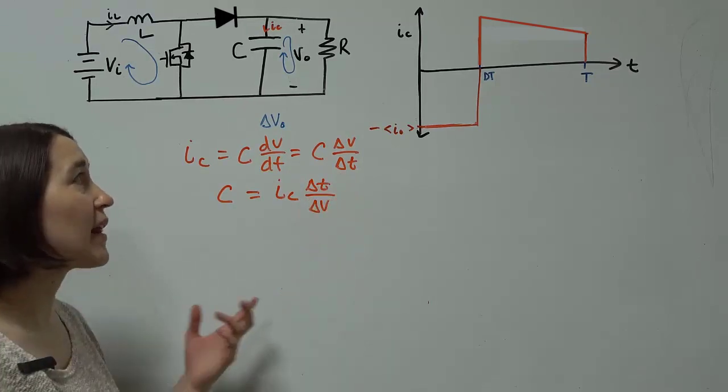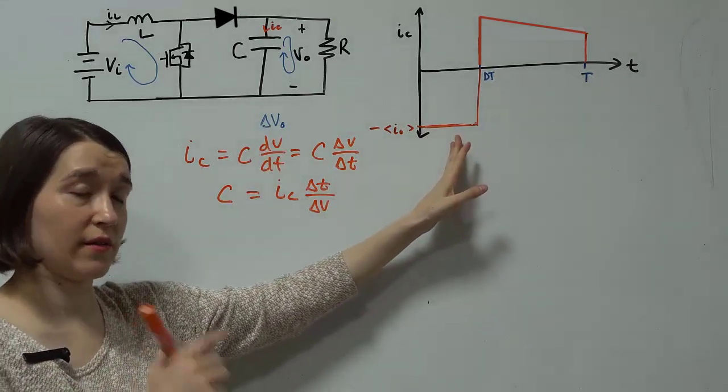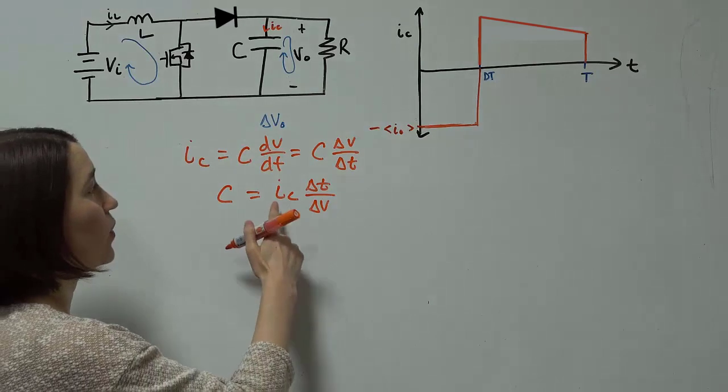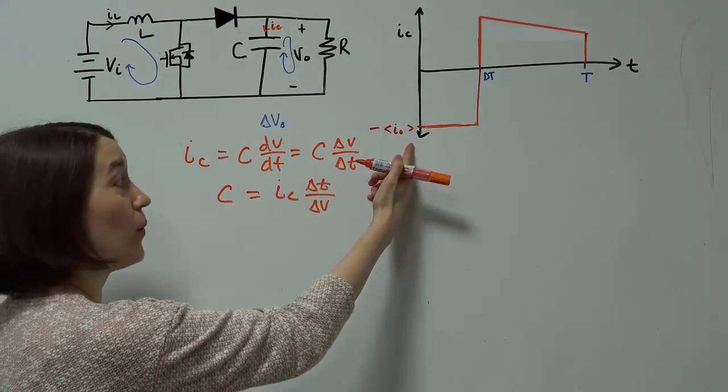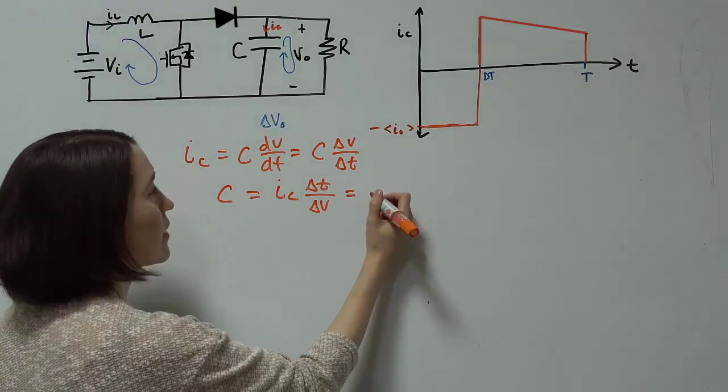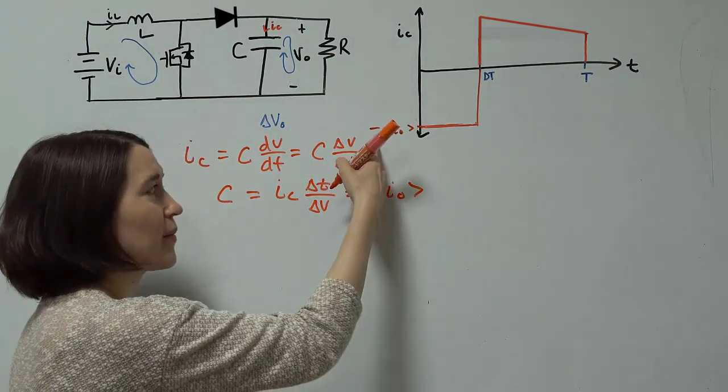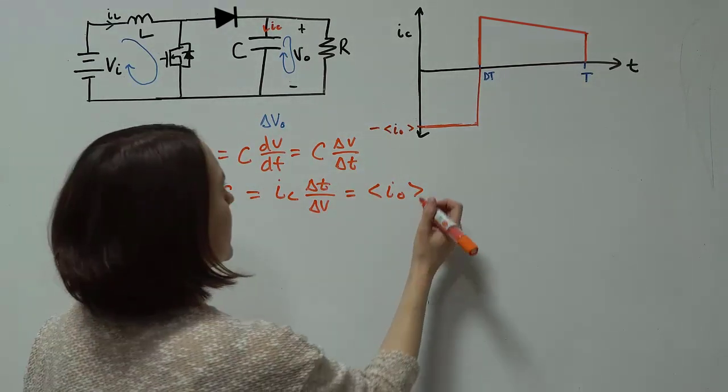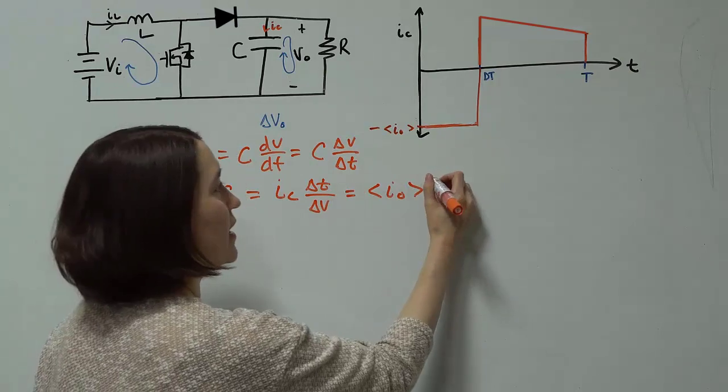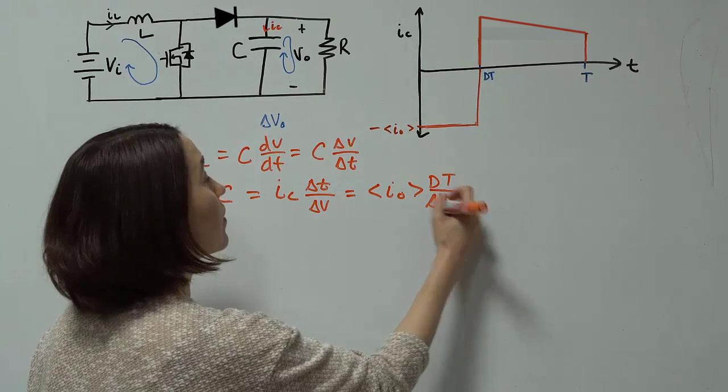Our capacitance value is going to be equal to the current IC times delta T divided by delta V. If we apply the conditions for the switch on phase, we will see that IC is going to become this IO. It's actually going to be negative, but the delta V is also going to be negative, so those will cancel out.